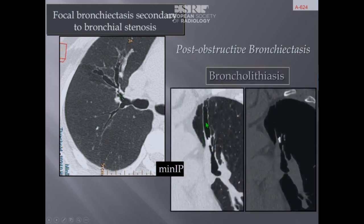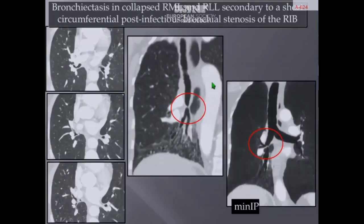We see an example of very distal post-obstructive bronchiectasis related to the presence of a small bronchial obstruction. For the last example, we have the typical short circumferential post-infectious stenosis at the origin of the right intermediate bronchus, responsible for bilobar atelectasis with post-obstructive bronchiectasis.